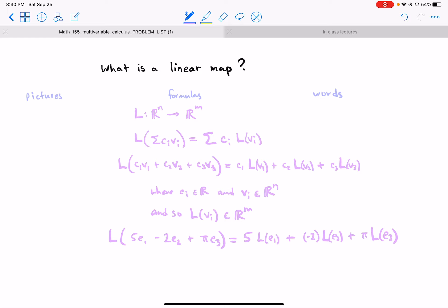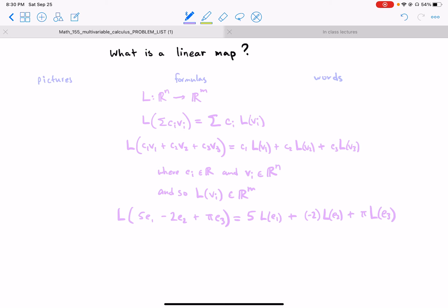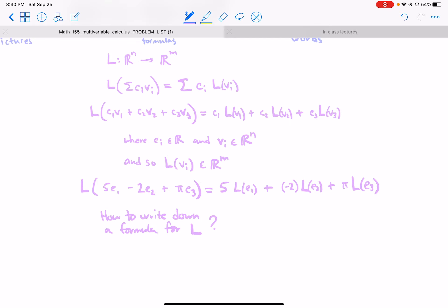Okay, so this is in formulas what's happening. Now, one more thing about formulas: so then how to write down the formulas, or a formula for L? If L is a linear map, well what I'm telling you is that actually it's enough to prescribe it on the basis vectors. So I just have to tell you what is L of E1,